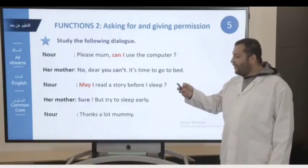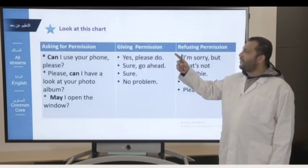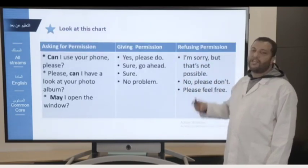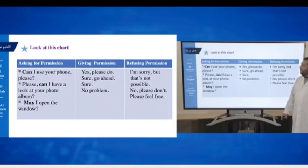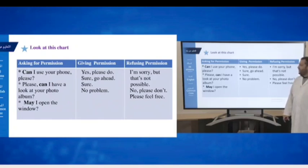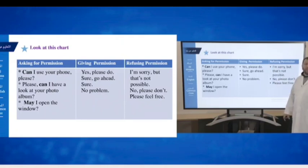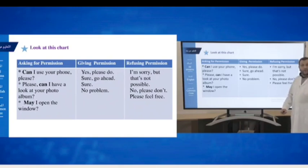Now let's learn more expressions of asking for permission, giving permission, and refusing permission. For example, asking for permission: Can I use your phone please? Please, can I have a look at your photo album? May I open the window? To give permission, you can say: Yes, please do. Sure, go ahead. Or sure. Then you can say No problem.